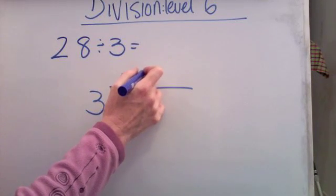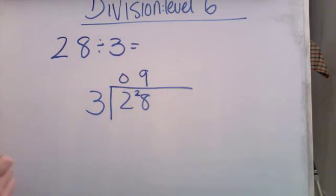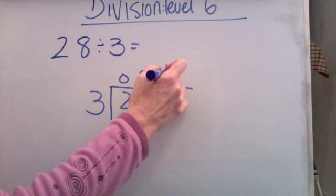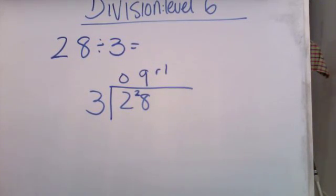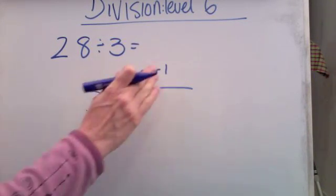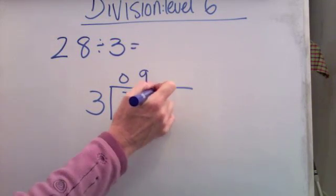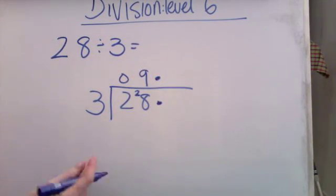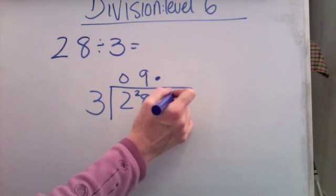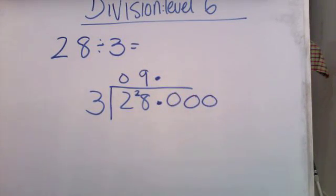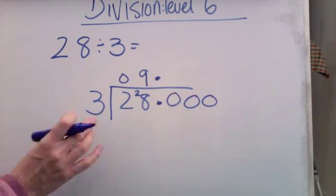Well, nine threes are 27 and I have one left over to make 28. Instead of putting my remainder there like that, I'm going to turn it into a decimal. So I'm going to put a decimal point in here. After a decimal point, I can put as many zeros as I like.